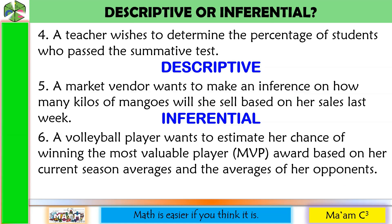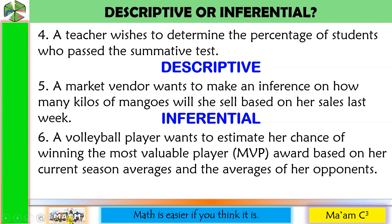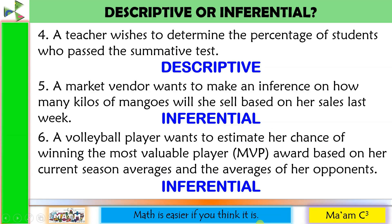Last one — a volleyball player wants to estimate her chance of winning the most valuable player award based on her current season averages and the averages of her opponents. 'Estimate the chance of winning' is something in the future. So this is inferential statistics.